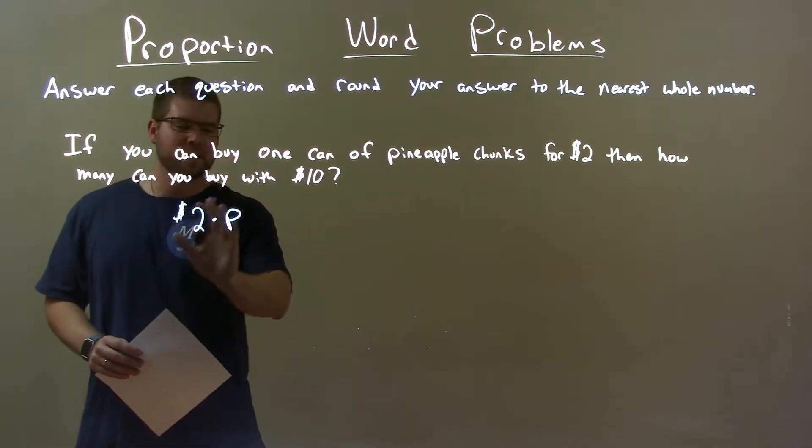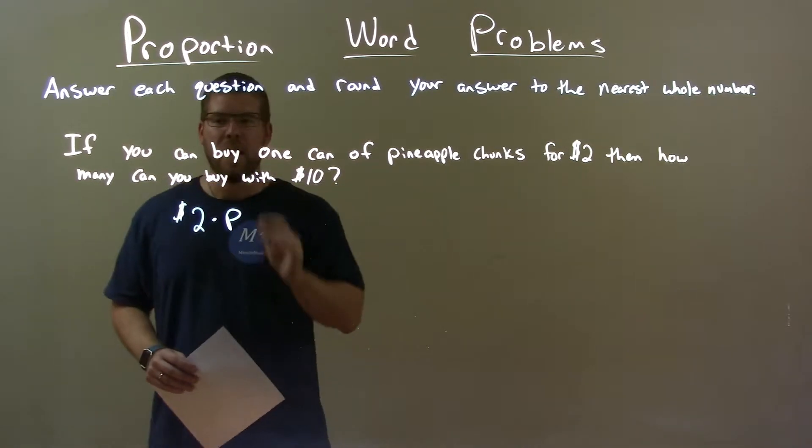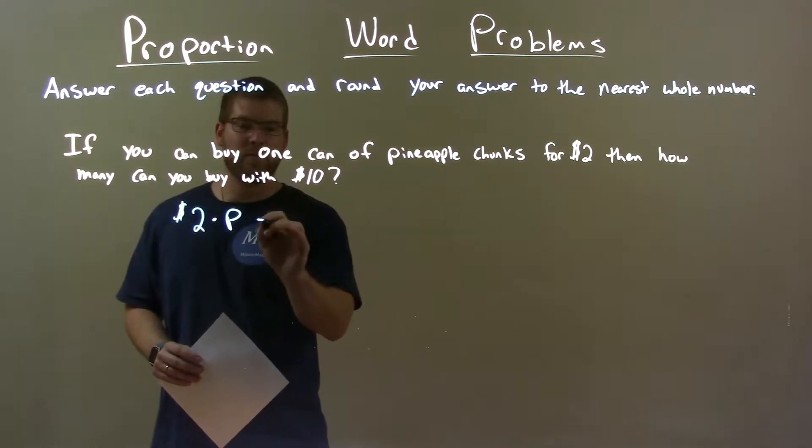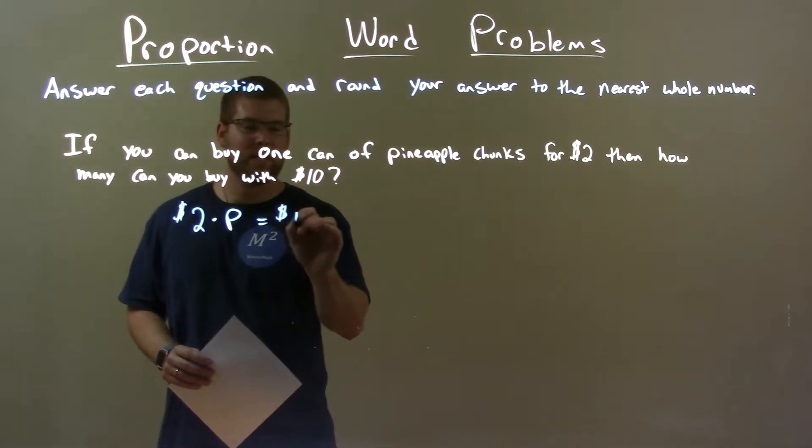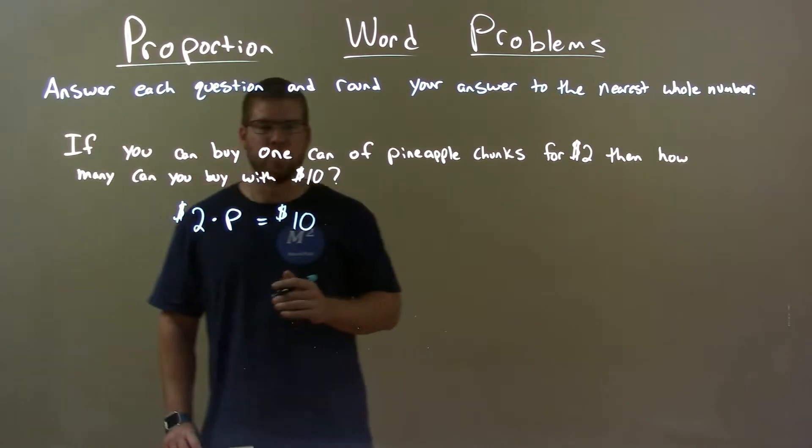So we now have $2 times P. And we're going to see how many we can buy with a total of $10, so we're going to set that equal to 10 and now we're going to solve for P.